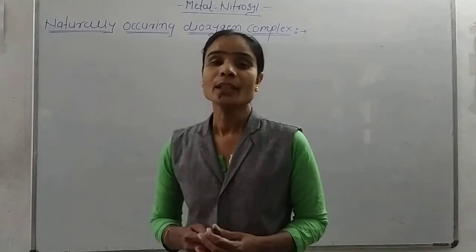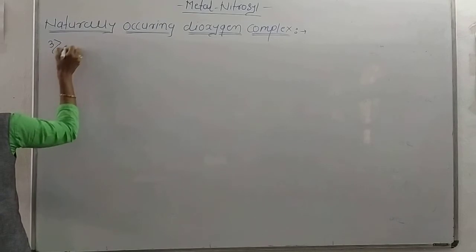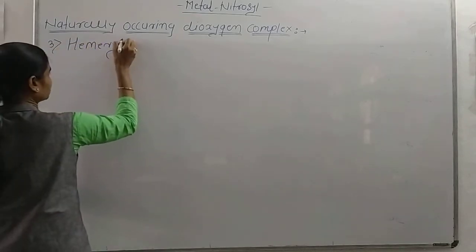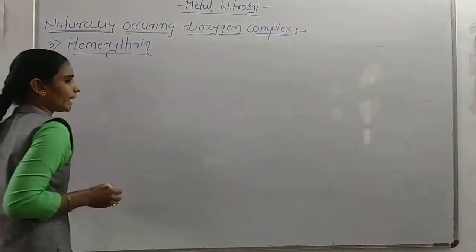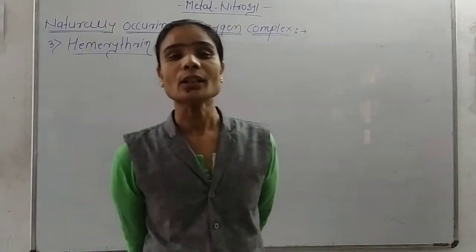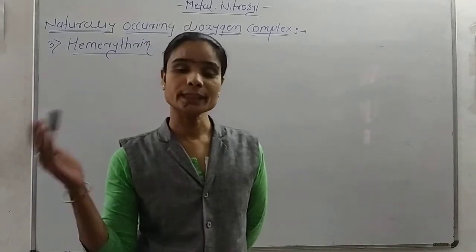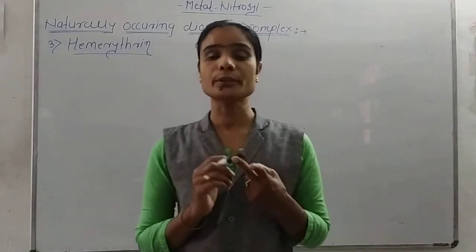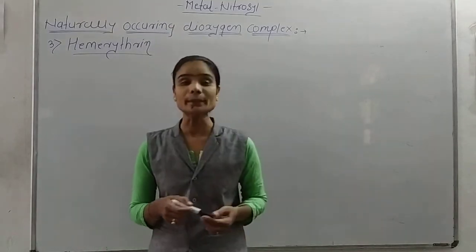Now the third dioxygen molecule is hemerythrin. We already know that there are four naturally occurring dioxygen molecules or complexes which act as oxygen carriers or oxygen storage in the living system. We have already covered the first two: hemoglobin and myoglobin. This third one is hemerythrin.